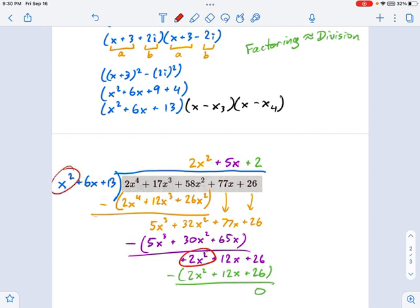2x squared divided by x squared equals 2. And then I'm going to multiply back down again. And look at that, I've got a remainder of 0. Now, I suspected I had a remainder of 0 because I knew at the very start of this that x squared plus 6x plus 13 was a factor, an irreducible quadratic factor. So I knew there had to be a remainder of 0.